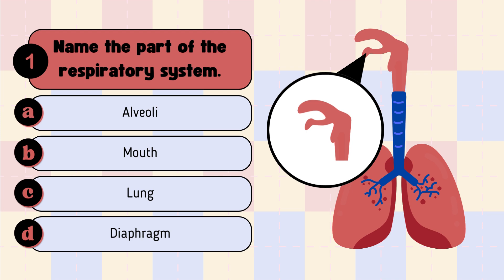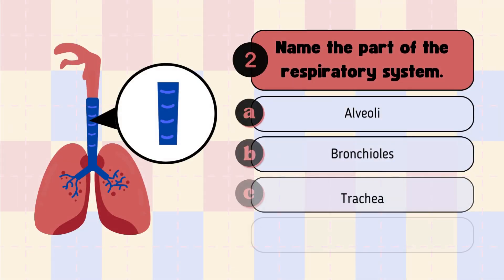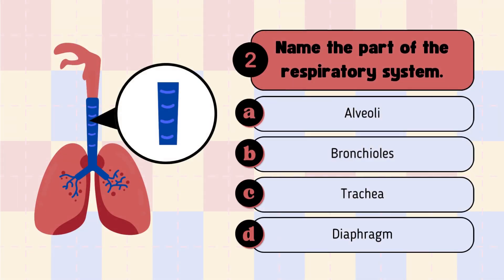Question 2: Name the path of the respiratory system. Look at the highlighted path and pick your answer from this option. A. Alveoli, B. Bronchiolus, C. Trachea, D. Diaphragm. Write your answer in your notes.